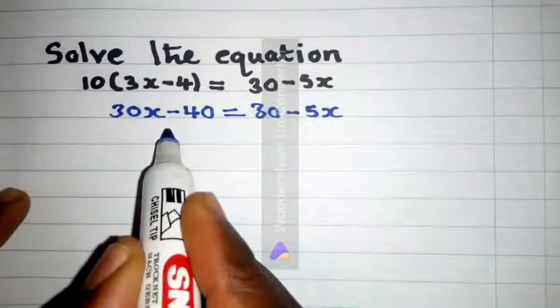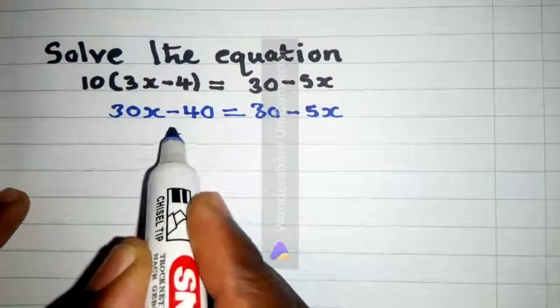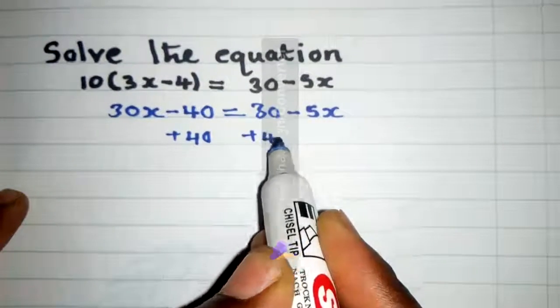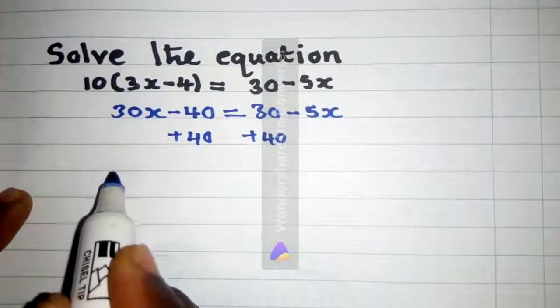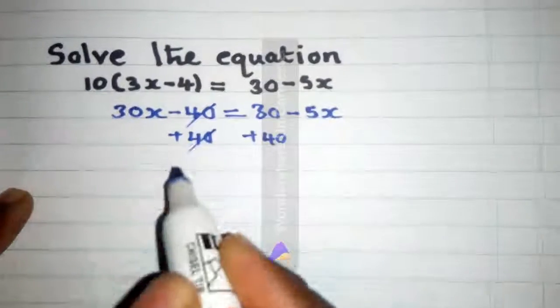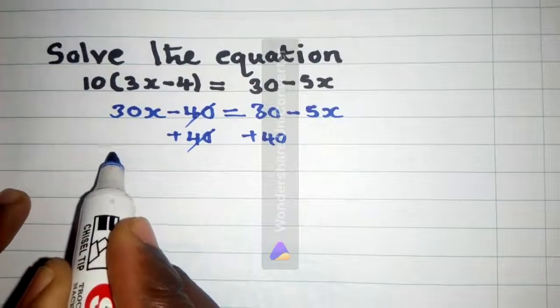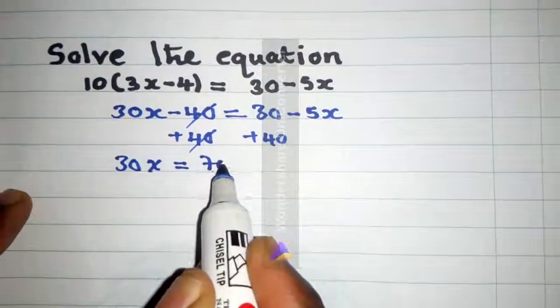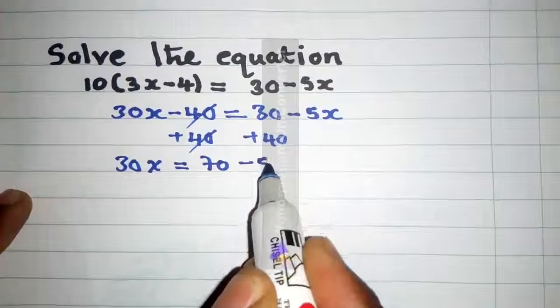Then we can start with the constants. We add 40, both sides. So we have this side, this and this will go. We have 30x is equal to 70 minus 5x.